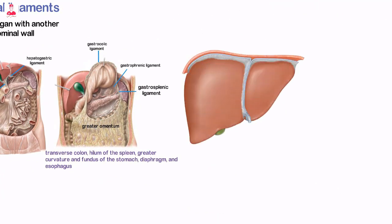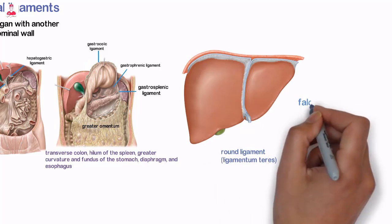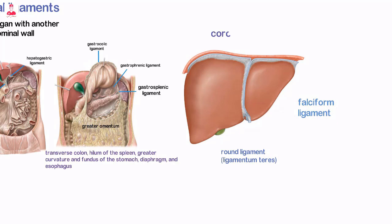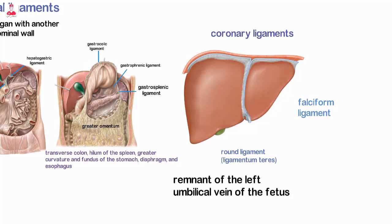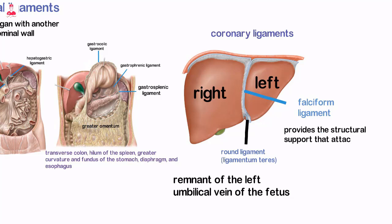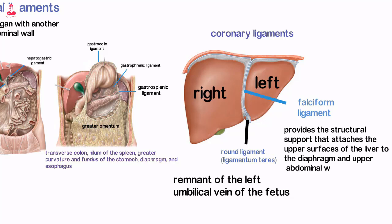Ligaments associated specifically with the liver are the round ligament (ligamentum teres), falciform ligament, and coronary ligaments. The round ligament is a remnant of the left umbilical vein of the fetus and runs within the free inferior margin of the falciform ligament to the umbilicus. The falciform ligament extends from the liver to the anterior abdominal wall and diaphragm, forming a plane that divides the liver anatomically into right and left lobes, and provides structural support attaching the upper surfaces of the liver to the diaphragm and upper abdominal wall. The coronary ligaments surround the superior pole of the liver and attach the liver to the diaphragm, forming the margins of the bare area.